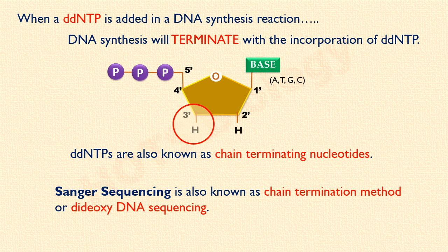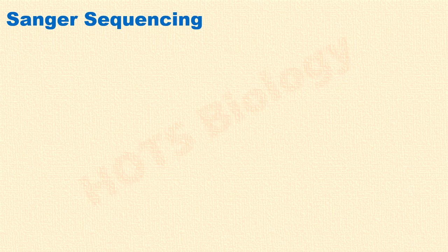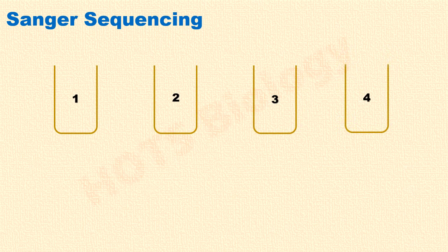So if the concept of dideoxynucleotides is clear to you, it will be easy to understand the procedure and interpret the results of Sanger sequencing technique. Let's now move on to the Sanger sequencing method. Sanger sequencing consists of 4 separate reactions that run parallelly. We will label them as 1, 2, 3, and 4.